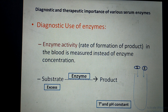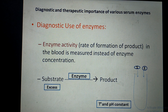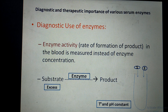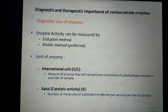By measuring the product formed after a fixed period of time, we can indirectly determine the enzyme concentration in the blood. If the blood contains a normal amount of enzyme, a small amount of substrate is converted; if diseased, a larger amount is converted. This indirect measurement is called enzyme activity — the rate of product formation. Enzyme activity can be measured by two methods: the endpoint method and the kinetic method, which are studied during practical classes.